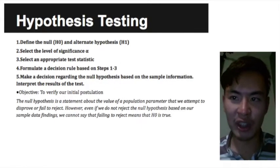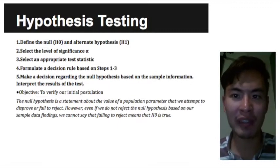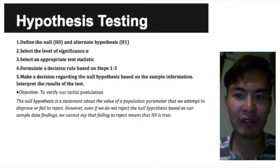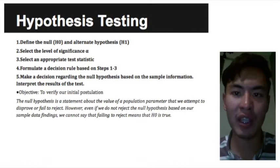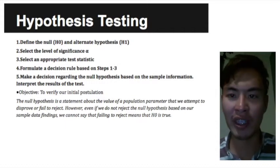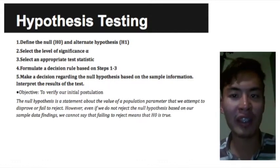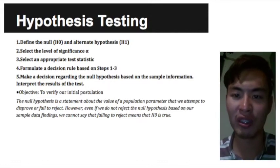After correlation and regression analysis, we begin the five-step hypothesis testing process. A hypothesis is defined as an unverified statement about a population parameter, and the first two steps help us discover differences between our hypothesis and actual findings. We begin step one by stating the null and alternate hypothesis. The null hypothesis is a statement about the value of a population parameter that we attempt to disprove or fail to reject. However, even if we do not reject the null hypothesis based on our sample data findings, we cannot say that failing to reject means the null is true.